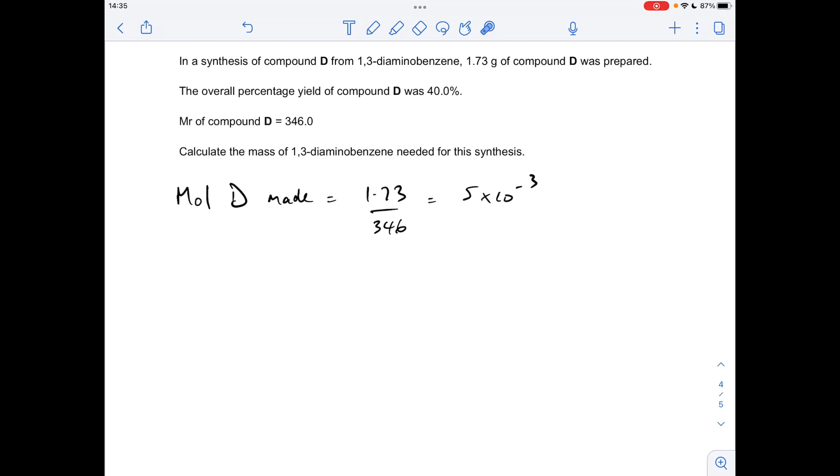And the final part of the question, the percentage yield question. So we've got to make 1.73 grams of D. The percentage yield for the process is 40%. What mass of 1,3-diaminobenzene is needed for the synthesis? So the first thing I've done is just worked out how many moles of D have been made. Mass over MR, so we get that. How many moles of this 1,3-diaminobenzene, just calling it 1,3-DAB for short. How many moles would be needed, but we've got to factor in it's only a 40% yield. So if we divide the moles by 40, but multiply it by 100, we'll scale it up to how much we're going to need. And then all we need to do is convert it to grams by multiplying by the MR of this 1,3-diaminobenzene, which is 108, and we get 1.35 grams.